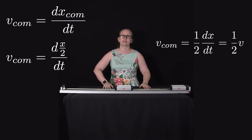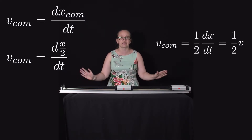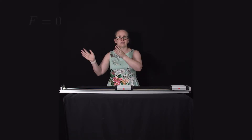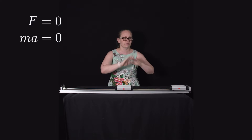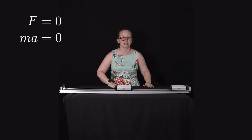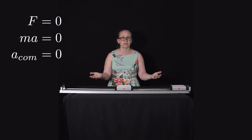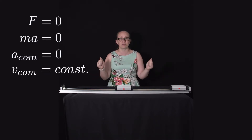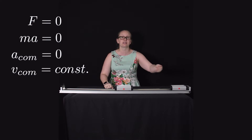Let's have a look at this physically using tracker. We'll look at a couple of different collisions. One cart has zero speed, and the other will be moving towards it with speed v. During the collision, if there are no external forces, Newton's second law tells us that if F is zero, then ma is also zero. Since the mass is not zero, the acceleration of the center of mass must also be zero, meaning the speed of the center of mass cannot be changing — it must remain constant.